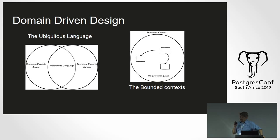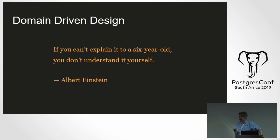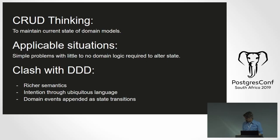Bounded context keeps the meaning of 'tab' in the context of the café, as opposed to, say, head office at a chain restaurant, where they might have a different perspective of what a tab is. As Einstein said: if you can't explain it to a six-year-old, you probably don't understand it well enough. It's 70% planning, 30% implementation — you really need to figure it out before you start.